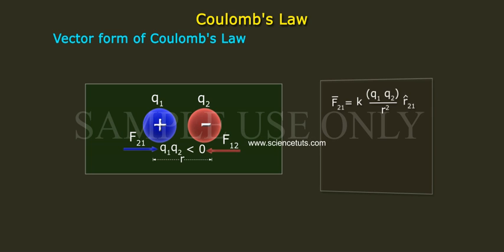Similarly, if F12 bar is the force exerted on charge Q1 by Q2 and Q1 Q2 greater than 0, then F12 bar is equal to K into Q1 Q2 by r square r12 cap, where r12 cap is the unit vector pointing from Q1 to Q2.